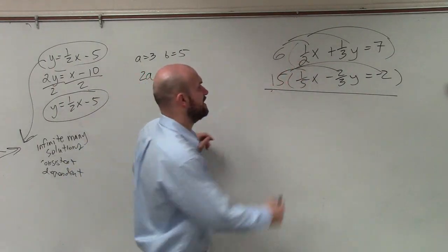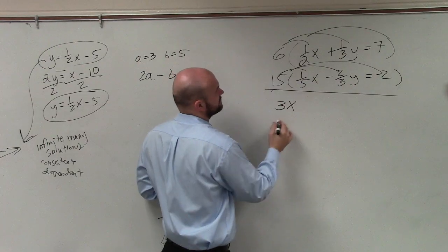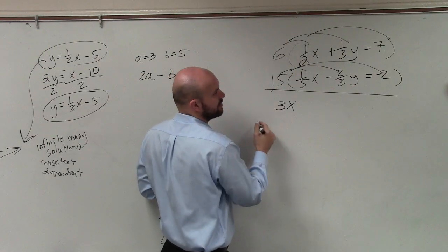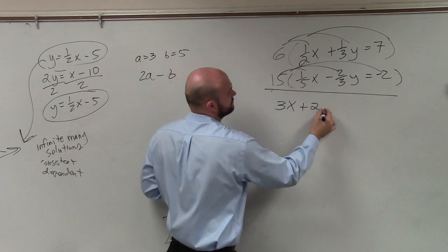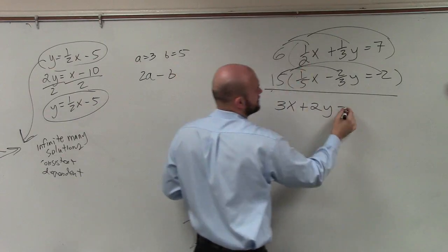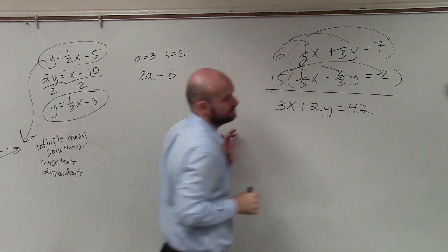So 6 times one-half x is going to be 3x. 6 times one-third y is going to be 2y. 6 times 7 is equal to 42. Follow me?